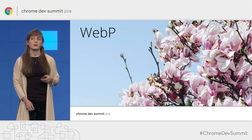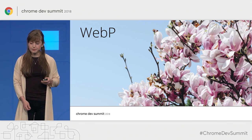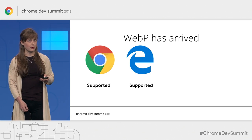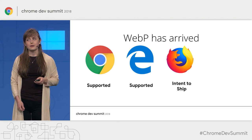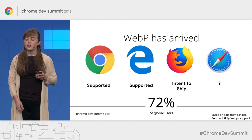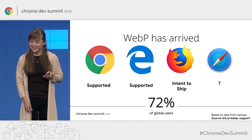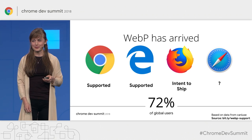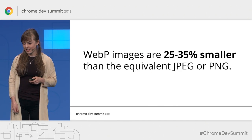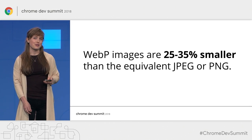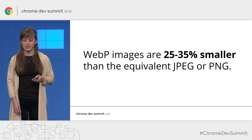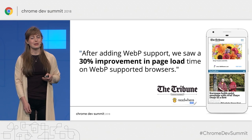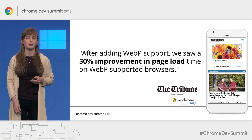Now we'll switch gears and talk about a much more modern image format: WebP. WebP is no longer a Chrome-only technology. Last month, Microsoft Edge shipped support for WebP, and Mozilla Firefox announced their intent to ship WebP. Currently, 72% of global web users have support for WebP, and given these recent developments, you can expect this number to only increase. This is a big deal because WebP images are 25% to 35% smaller than the equivalent JPEG or PNG. When the Tribune added support for WebP, they found a 30% improvement in page load times on WebP-supported browsers.